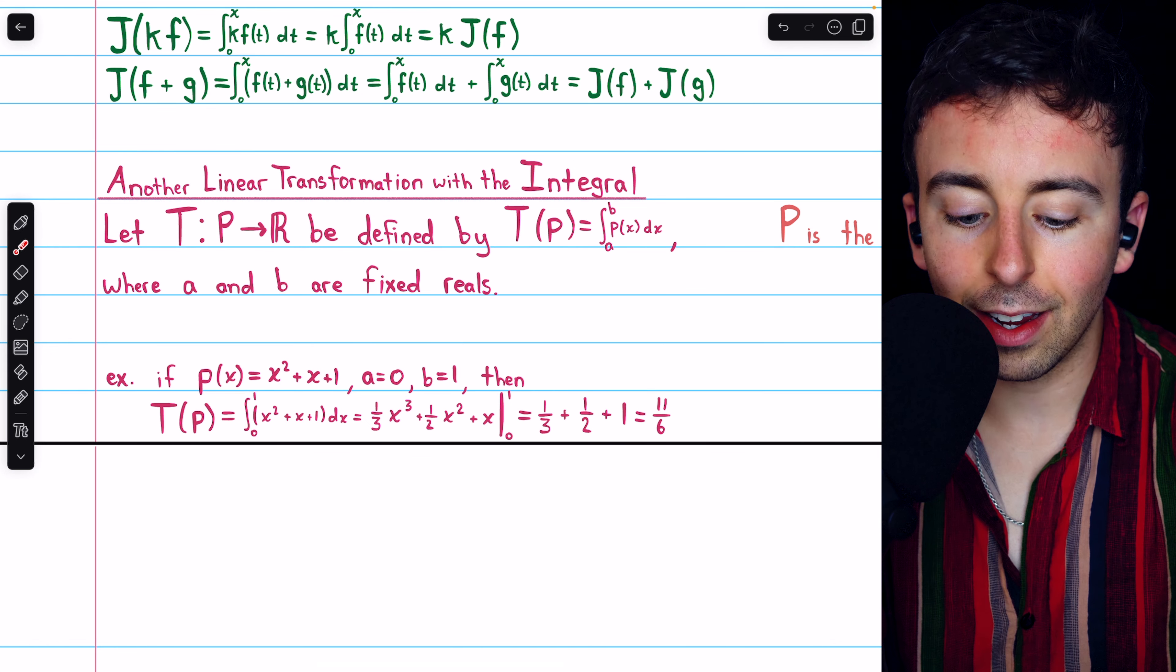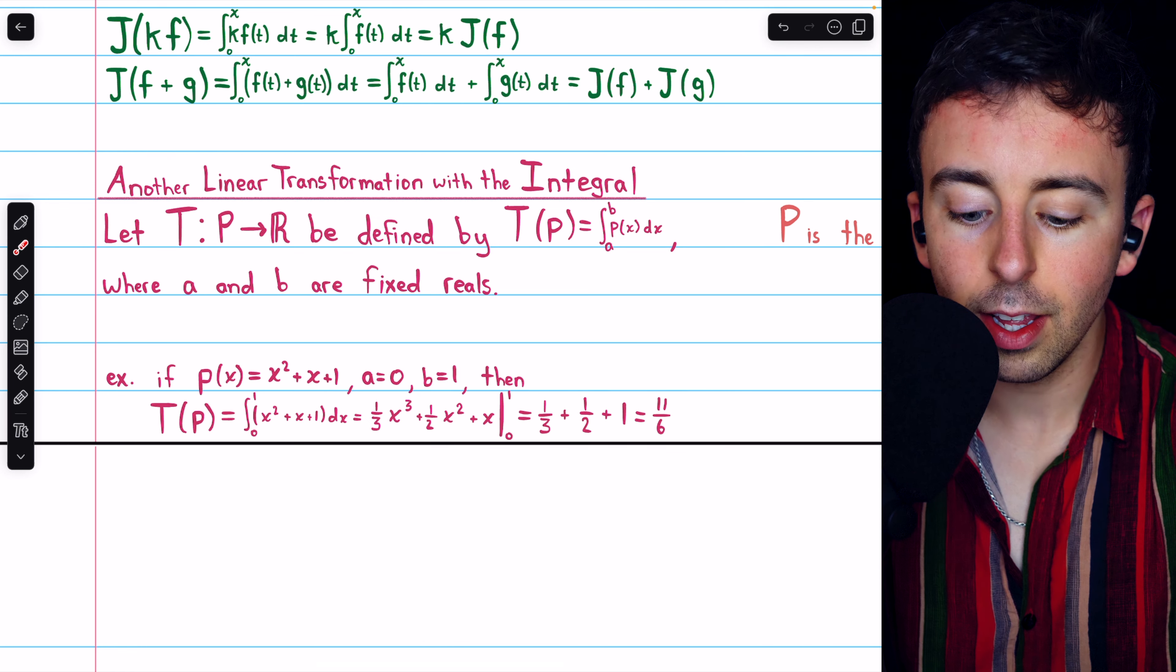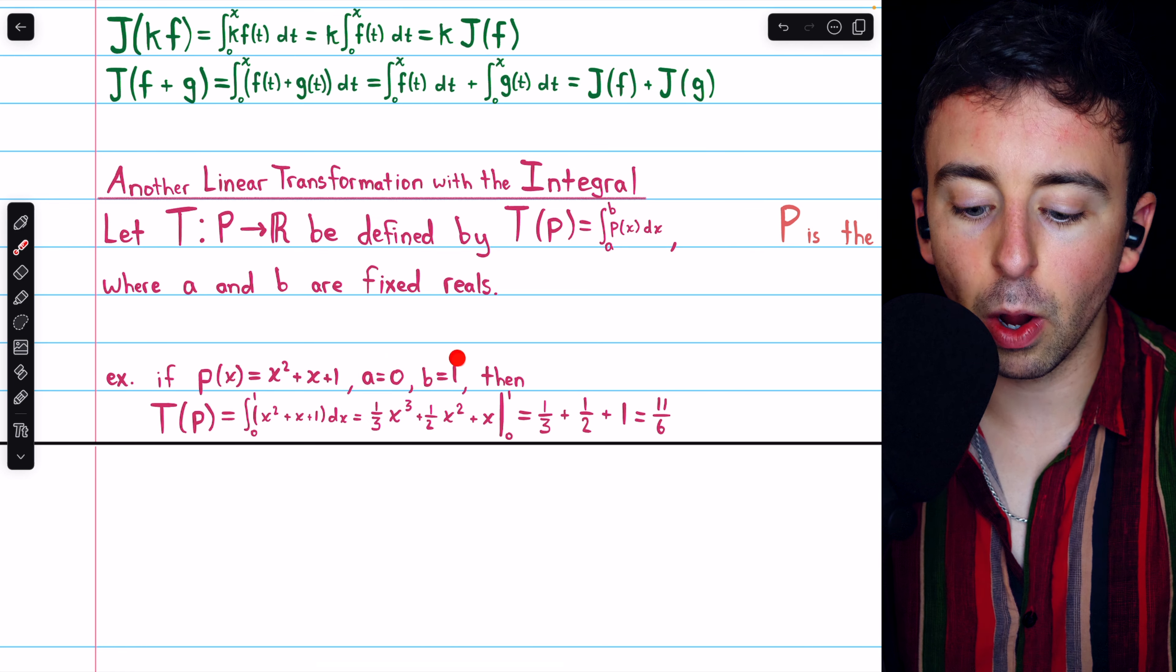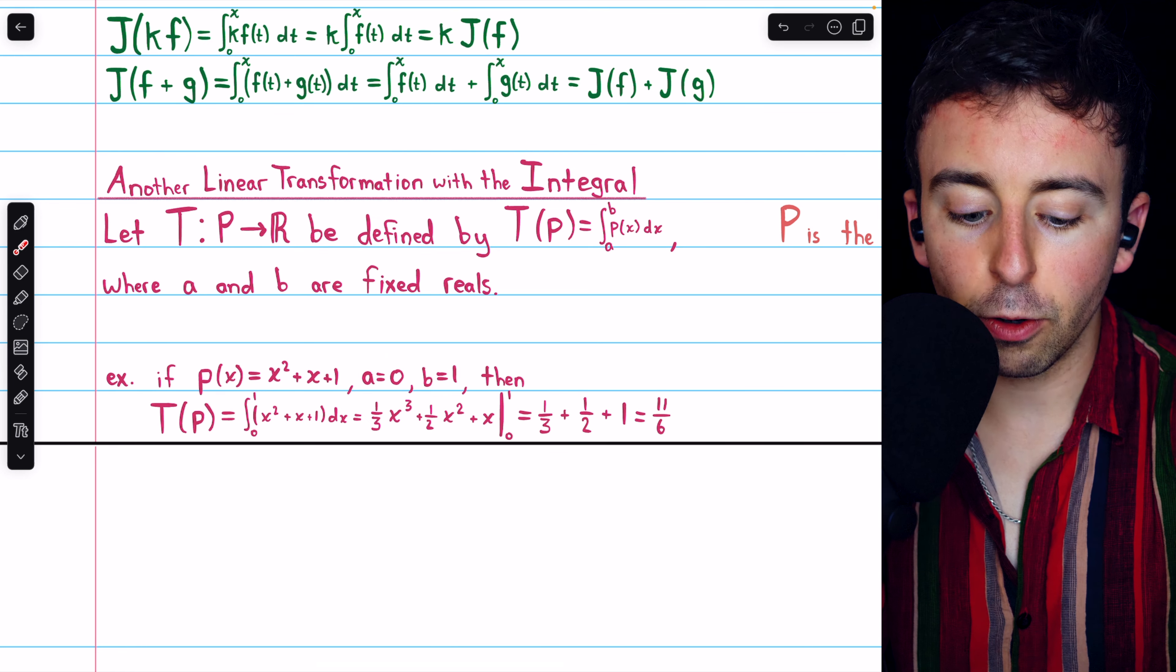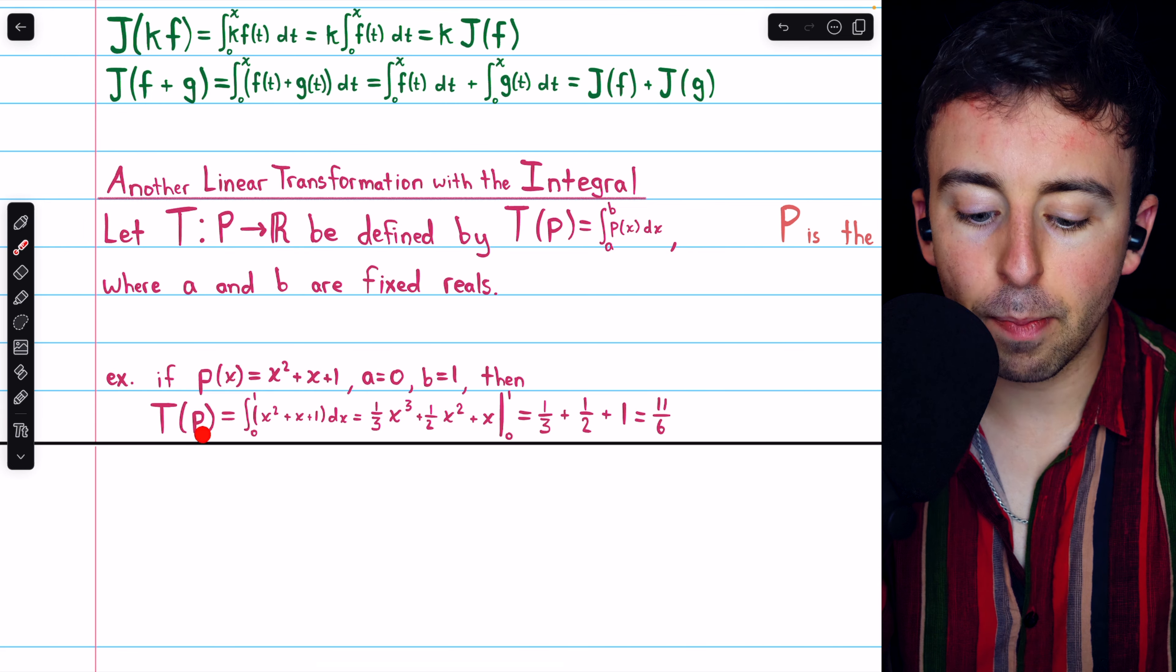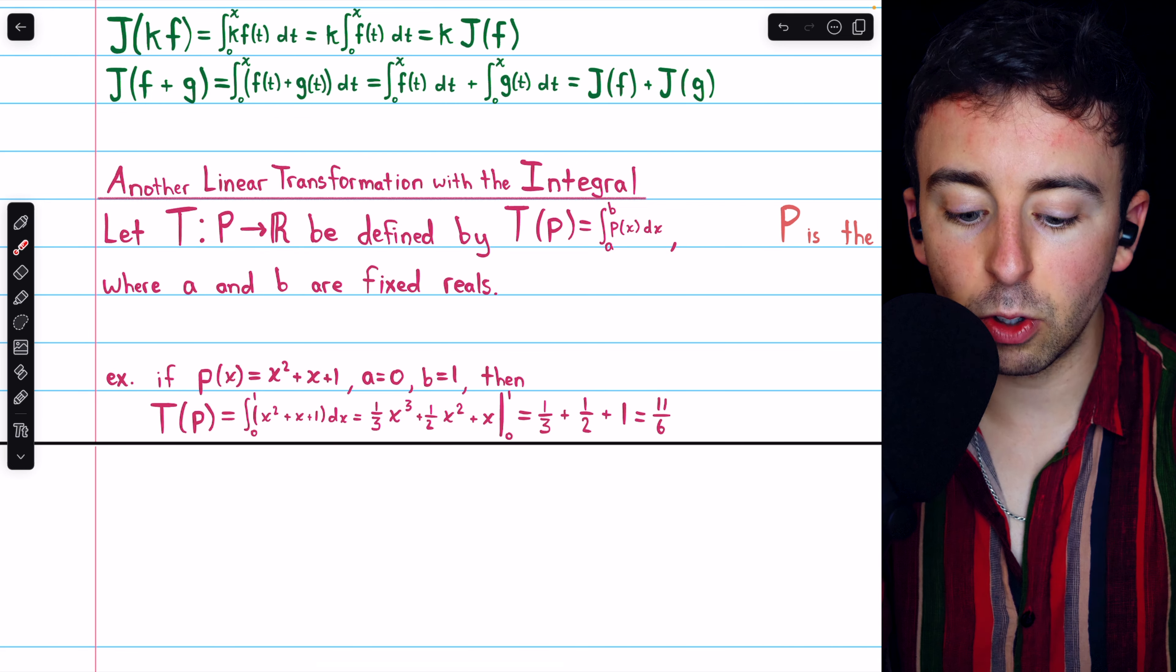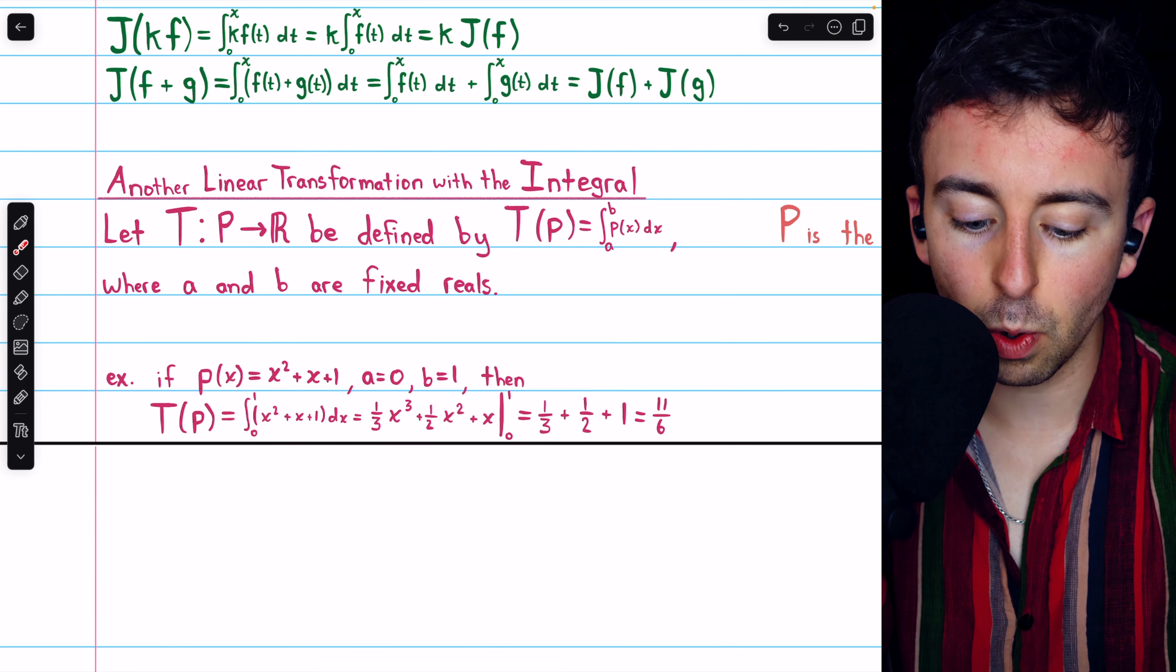For example, if p of x is x squared plus x plus 1, and let's say a equals 0 and b equals 1, then our transformation T will map p to the area underneath it between x equals 0 and x equals 1.